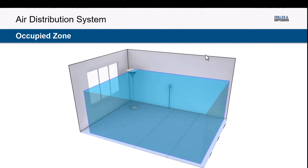So what is the occupied zone? We define it as six feet above the finished floor, one foot off an interior wall, and three feet off an exterior wall. That's ASHRAE defining that six-foot level. In exterior or perimeter spaces, a lot of times we are trying to wash the window — basically treating the glazing on the exterior of the building from floor to ceiling — to minimize drafts in that space.